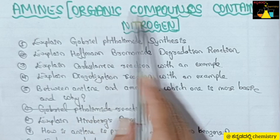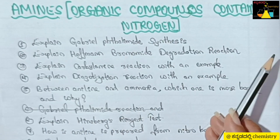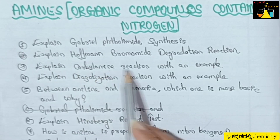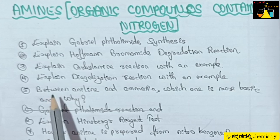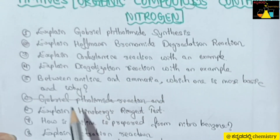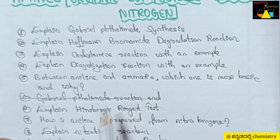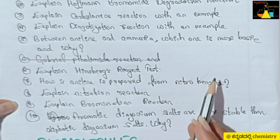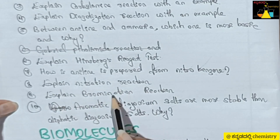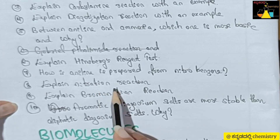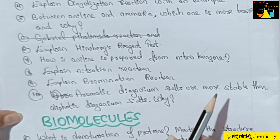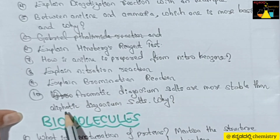The next chapter is Amines, or Organic Compounds Containing Nitrogen. Important questions include: explain Gabriel Phthalimide synthesis, explain Hofmann Bromamide degradation reaction, explain Carbylamine reaction with an example, explain Diazotization reaction with an example, between Aniline and Ammonia which one is more basic, explain Hinsberg's reagent test, how is Aniline prepared from Nitrobenzene, explain nitration reaction and bromination reaction using Aniline. Also note that aromatic diazonium salts are more stable than aliphatic diazonium salts.